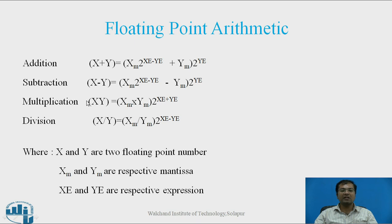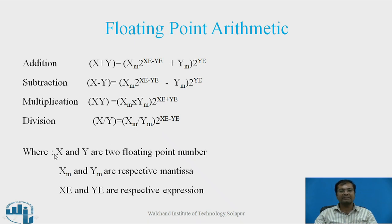For multiplication, x into y is equal to xm into ym into 2 raised to (xc plus y). And for division, x divided by y is equal to xm divided by ym into 2 raised to (xc minus y). Here x and y are two floating point numbers, xm and ym are their respective mantissas, and xc and y are their respective exponents.